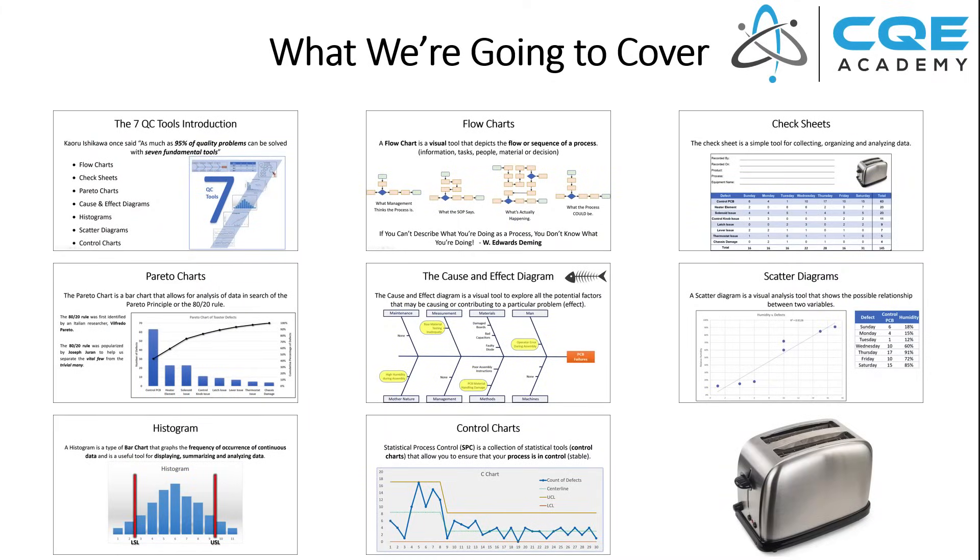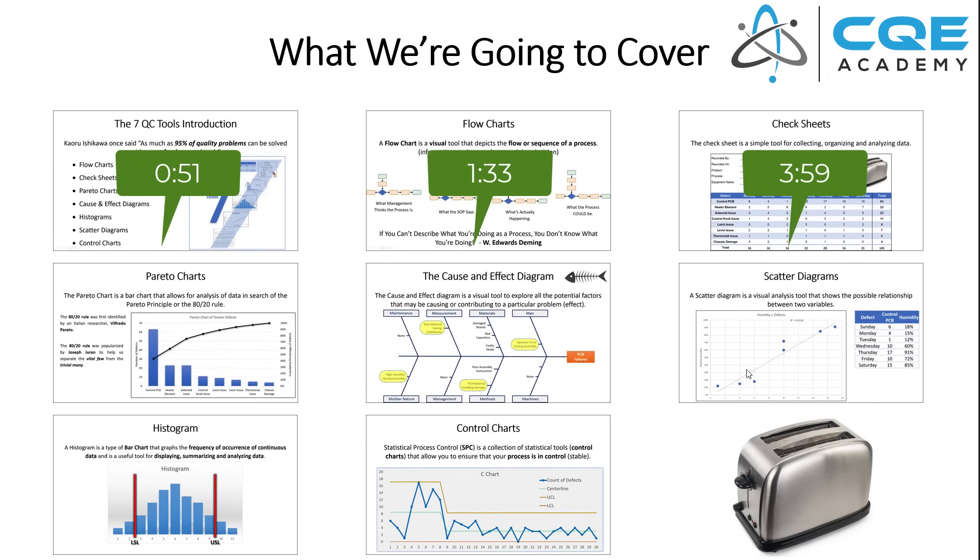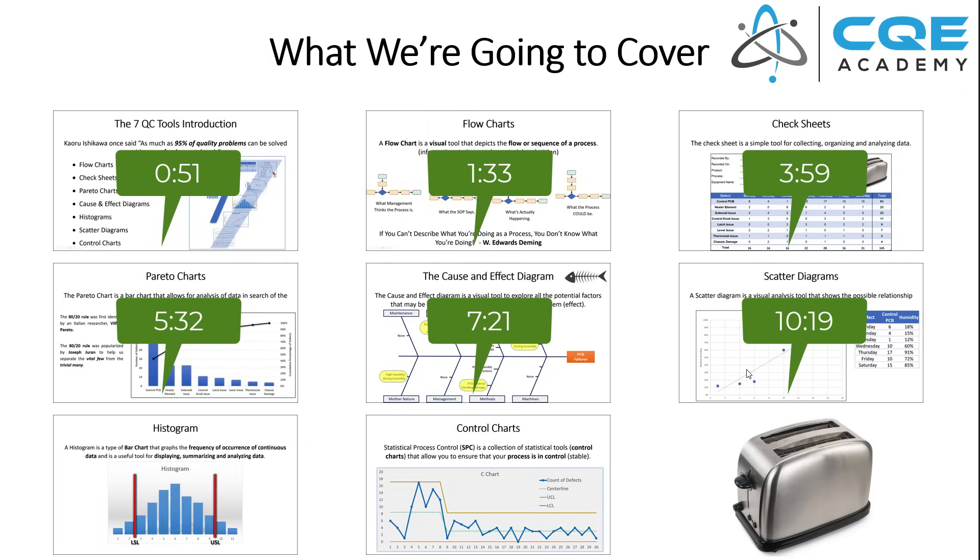Let's jump in right into the agenda. We're going to start with a brief intro of the seven QC tools, talk about how they fit into the problem solving process or the improvement process. Then we're going to go through each one: the flow chart, the check sheet, the Pareto chart, the cause and effect diagram, scatter diagram, histogram, and then the control charts.